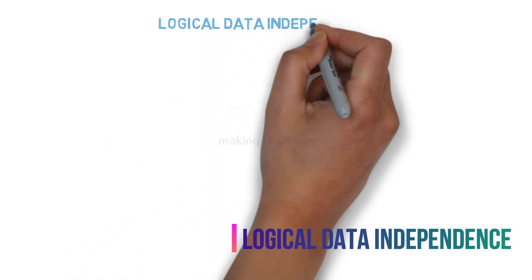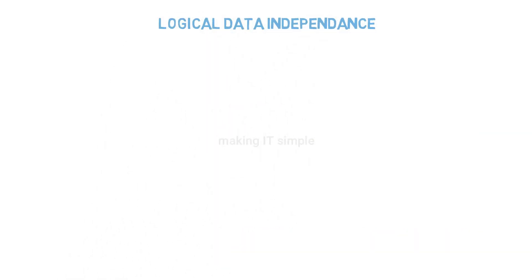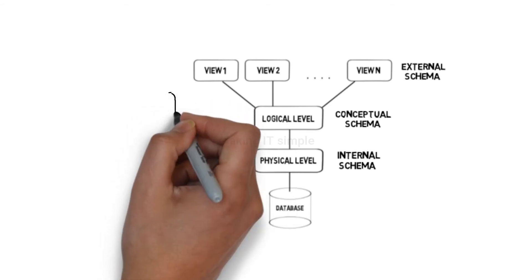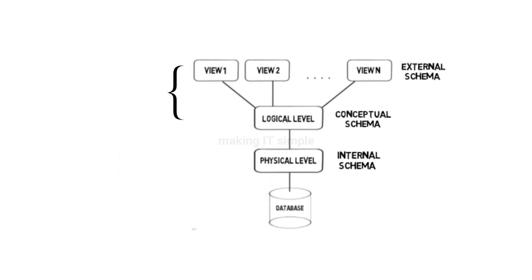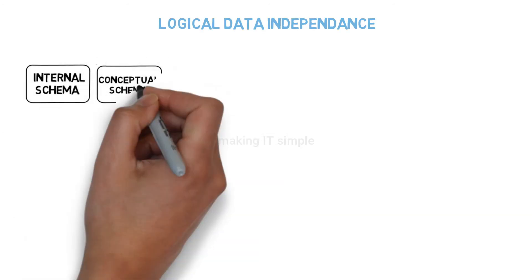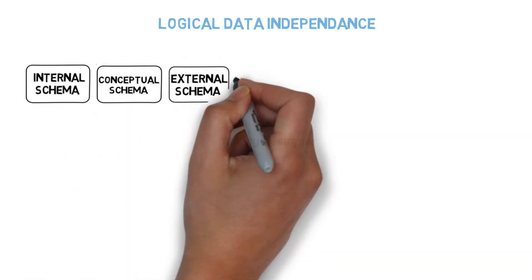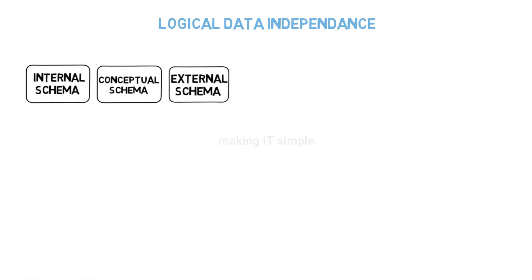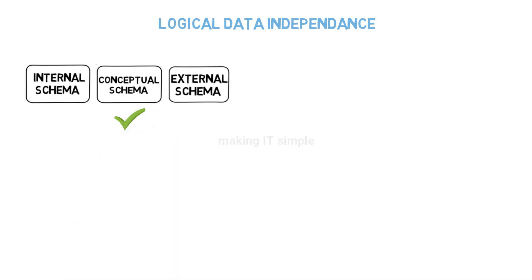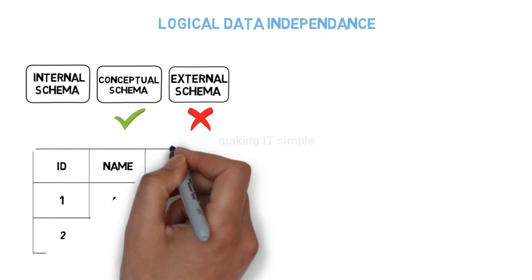The next type is logical data independence. It works between the logical or conceptual schema and the view or external schema. It refers to the characteristic of being able to modify the logical or conceptual schema without any modifications to the view or external schema. Let us see a few examples.